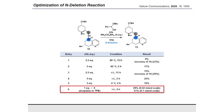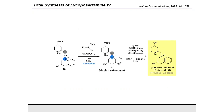The yield further improved to 51% upon conducting the reaction on 0.1 mmol scale. Notably, the product was obtained as a single diastereomer, suggesting complete transfer of the stereochemical information of the precursor. Following Boc deprotection, methylation, and TBS deprotection under acidic conditions, we completed the total synthesis of lycoposilamine W in 10 steps in the longest linear sequence.